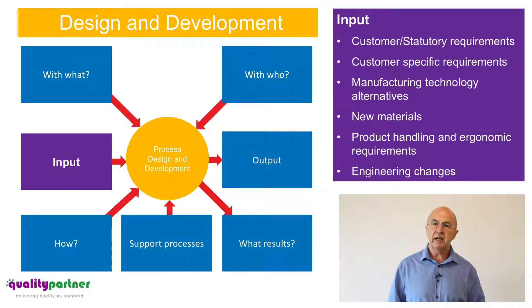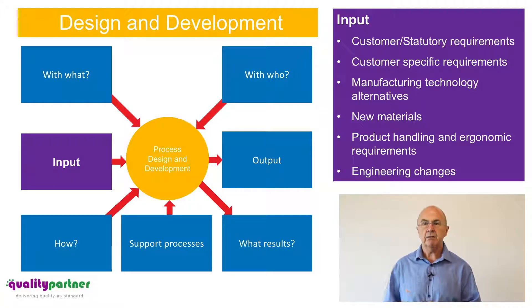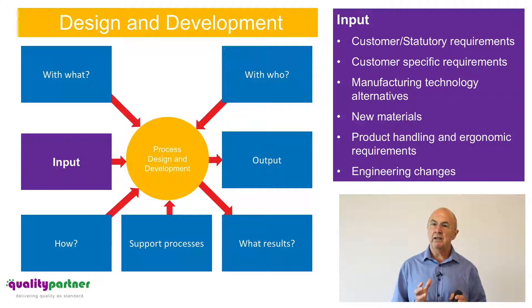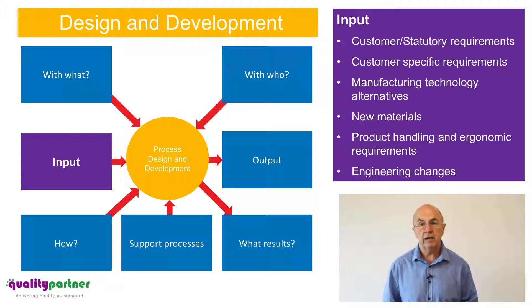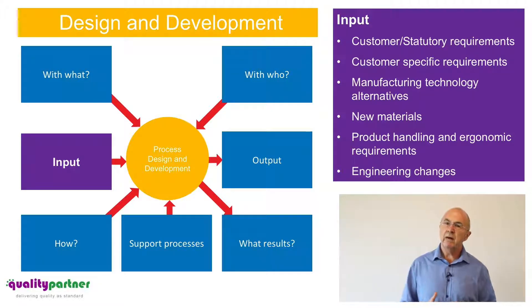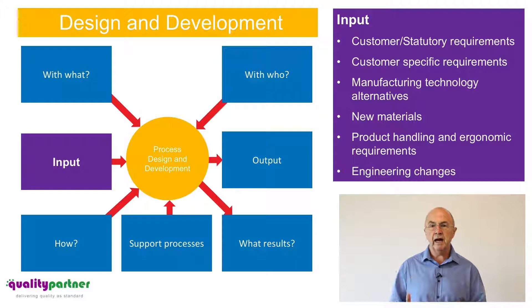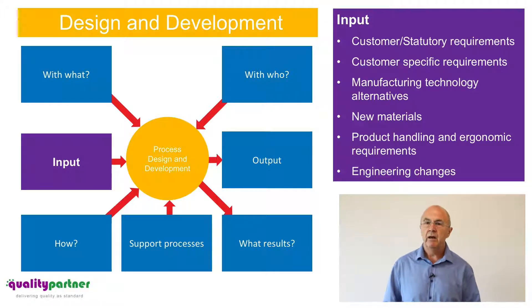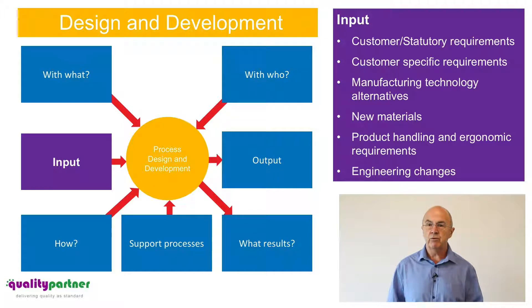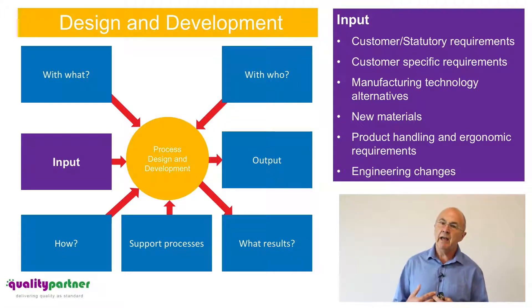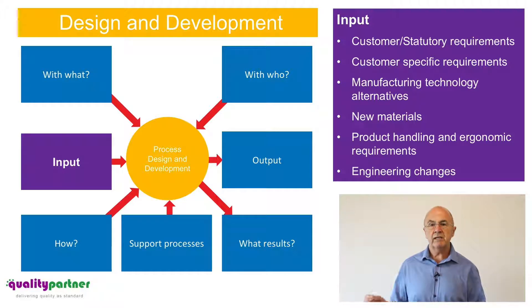What are the inputs in process design and development? First we need to understand the customer, statutory and regulatory requirements, including customer specific requirements and capacity requirements. We also need to understand whether there are manufacturing technology alternatives we can look at — for example, are there new materials available that we can use? We can also look at whether there are specific handling and ergonomic requirements through the process design.